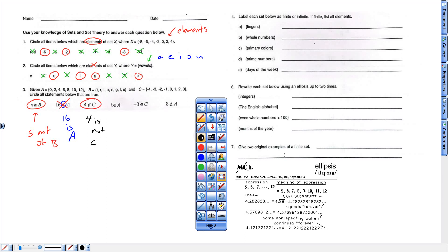This one says T is part of A. So if I look at A, there's no T in it. But this one says negative 3 is an element of C, and I can clearly see negative 3 in that set of C. This one says 8 is not part of A. So if I look at A, 8 is in there. So that's not true. I'm not going to circle that one.